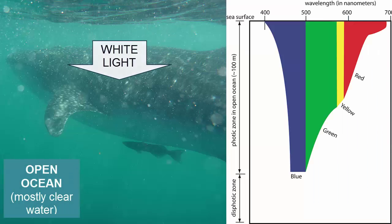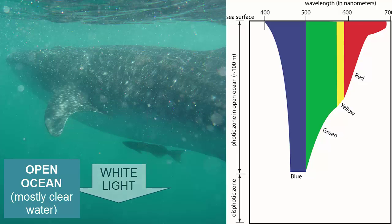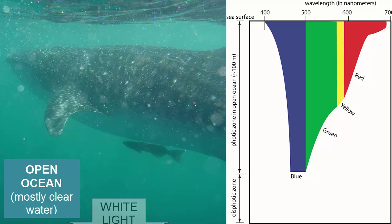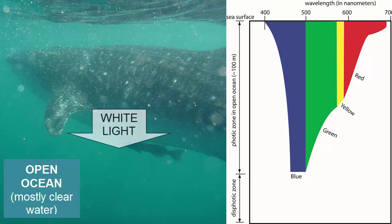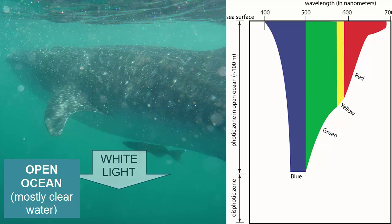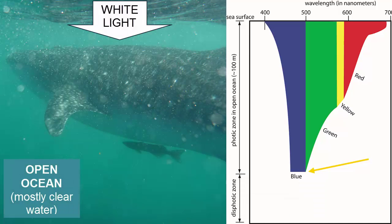In the open ocean with mostly clear water, white light descends through the photic zone with increasing absorption with depth by water molecules and the dissolved ions within it. As you can see from this absorption spectrum, red light is absorbed first and blue remains the longest. Hence, when we look down into the clear deep ocean, the color we see is blue.